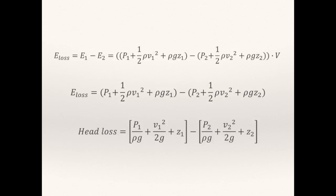The energy loss will be the difference between the energies at point 1 and 2, shown by the first equation. Since the volume is constant, we can eliminate it from the equation, giving us our second equation. Finally, we can divide through by the constants — fluid density rho and g — to provide our final formula for the energy loss, or head loss.